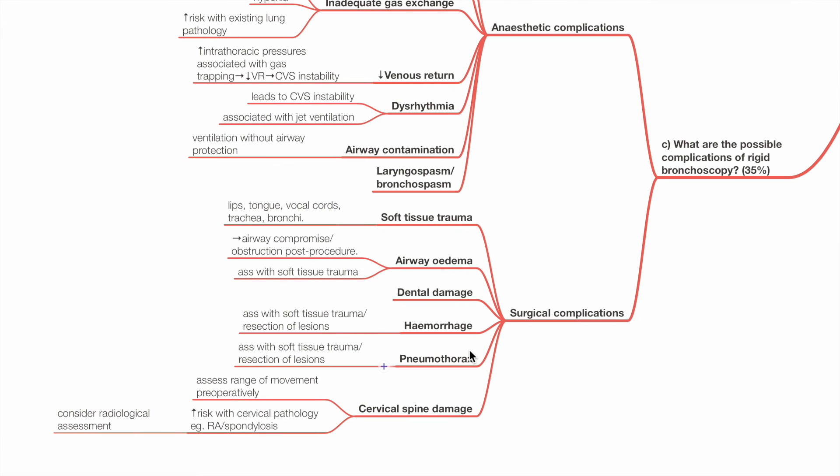Surgical complications include soft tissue trauma, for example to the lips, tongue, vocal cords, trachea, and bronchi. Airway edema leads to airway compromise or airway obstruction post-procedure. This is due to soft tissue trauma.